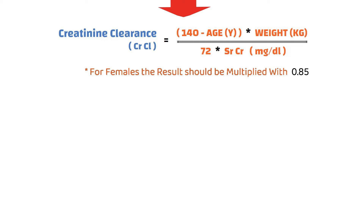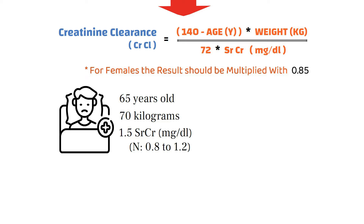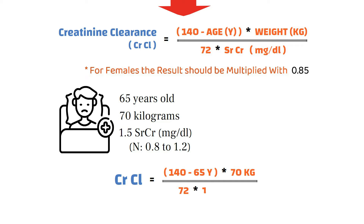Let's say we have a patient who is 65 years old, weighs 70 kg, and has a serum creatinine level of 1.5 milligrams per deciliter — the normal value is 0.8 to 1.2. To calculate their creatinine clearance, we would do: 140 minus 65, multiplied by 70, divided by 72 and 1.5. This will be equal to a creatinine clearance of approximately 48.6 ml per minute.